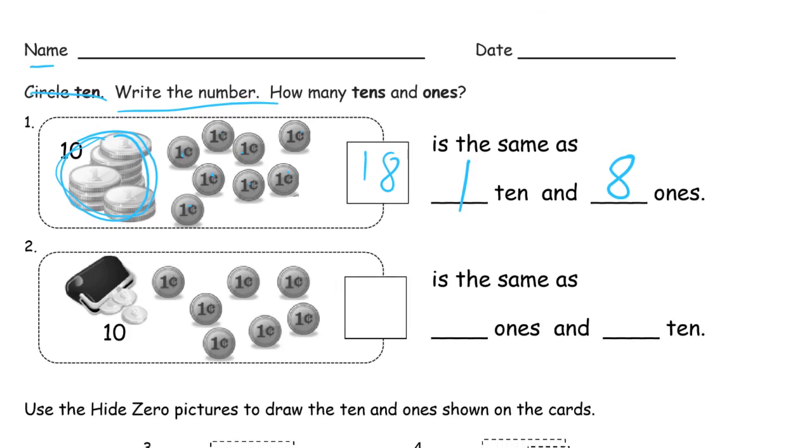And number 2, we have a purse full of change, we're just going to call this 10. And then we have how many more pennies? We have 1, 2, 3, 4, 5, 6, 7.